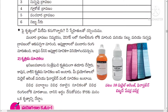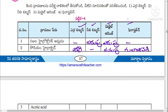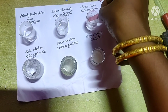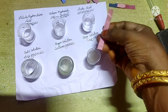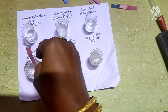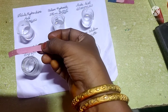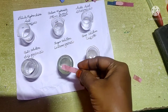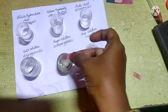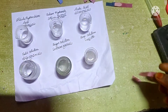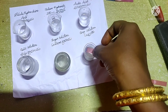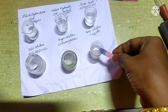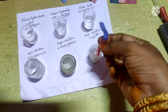Take red litmus paper and insert it into acetic acid solution — no change. Dip red litmus paper into salt solution — no change. Dip into sugar solution — no change. With soap solution, it turns blue. So whenever red litmus turns blue, the solution is a base.